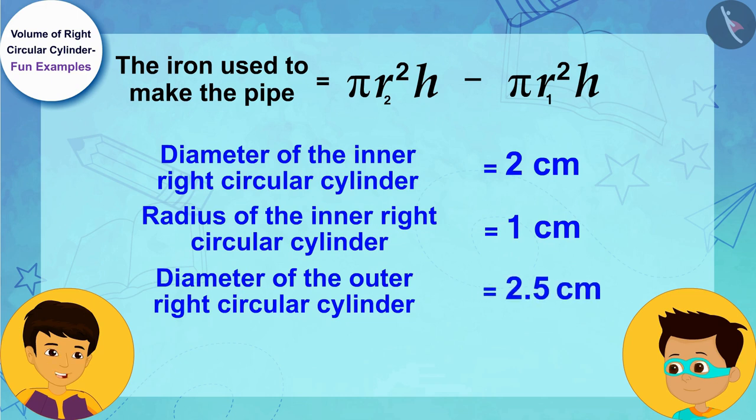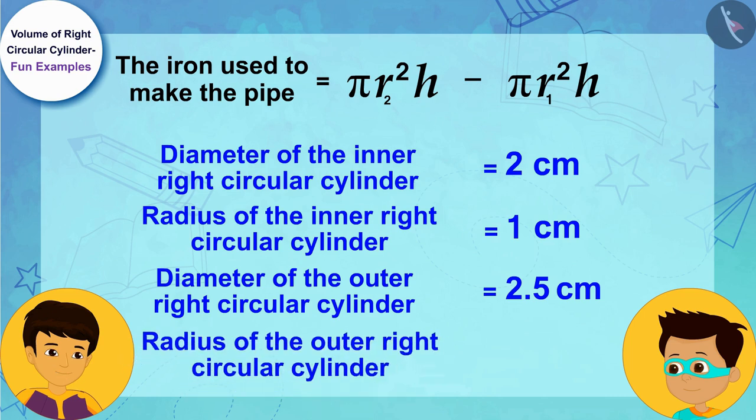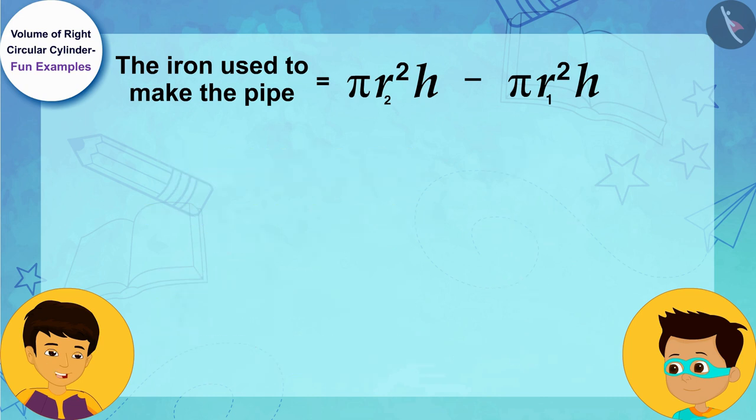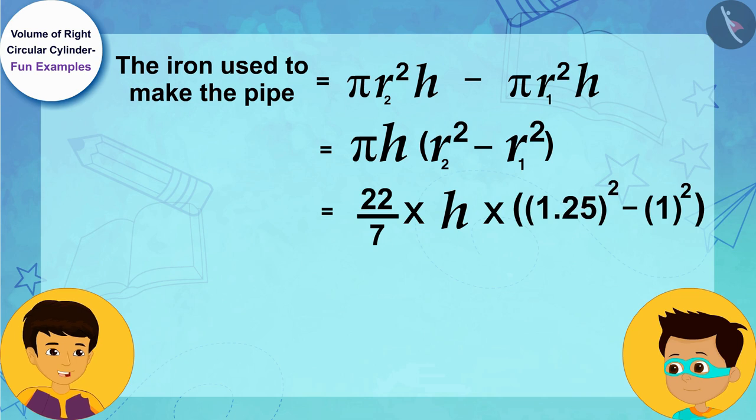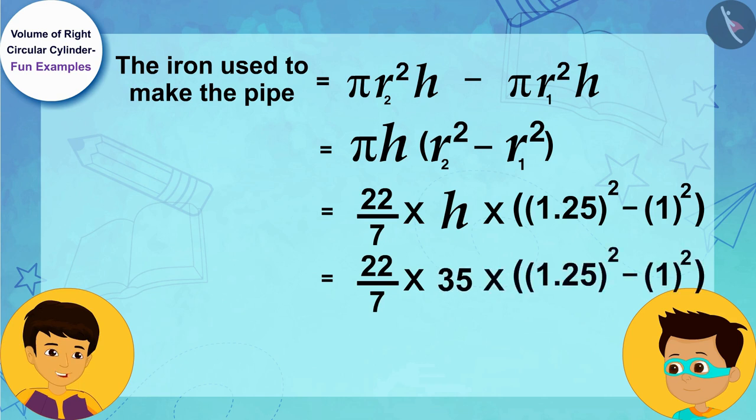Let us now write the radius of the inner cylindrical part, 1 centimeter, instead of r₁, and radius of outer cylindrical part of the pipe, 1.25 centimeters, instead of r₂ respectively, and then also write the height of the pipe, 35 centimeters, instead of h.